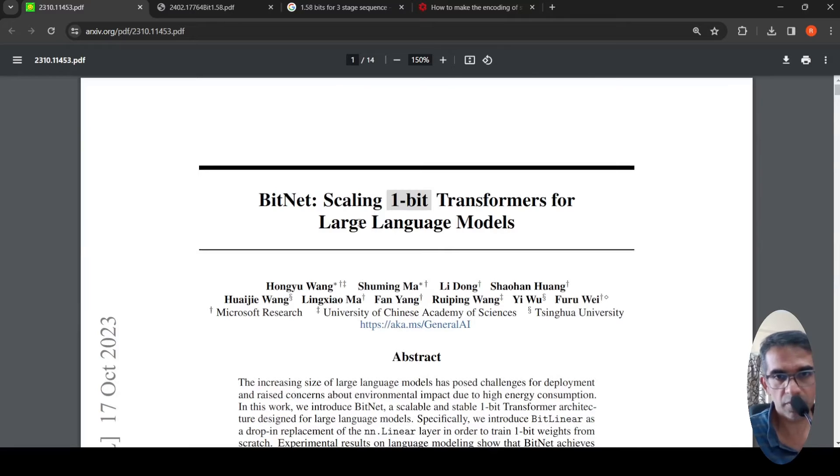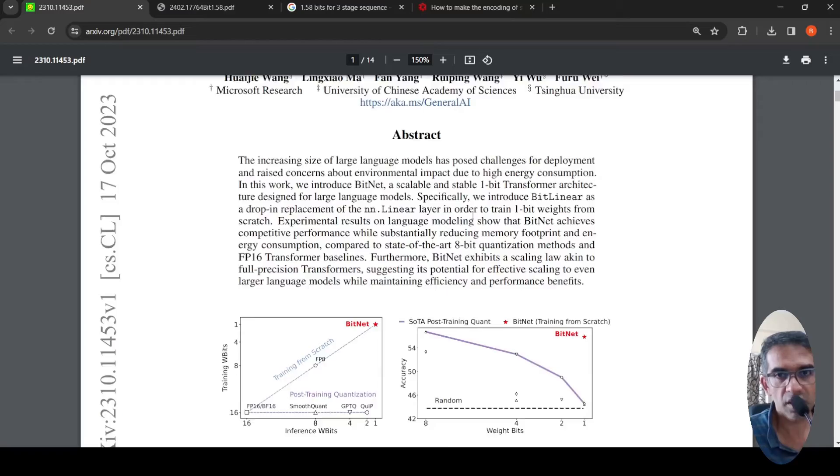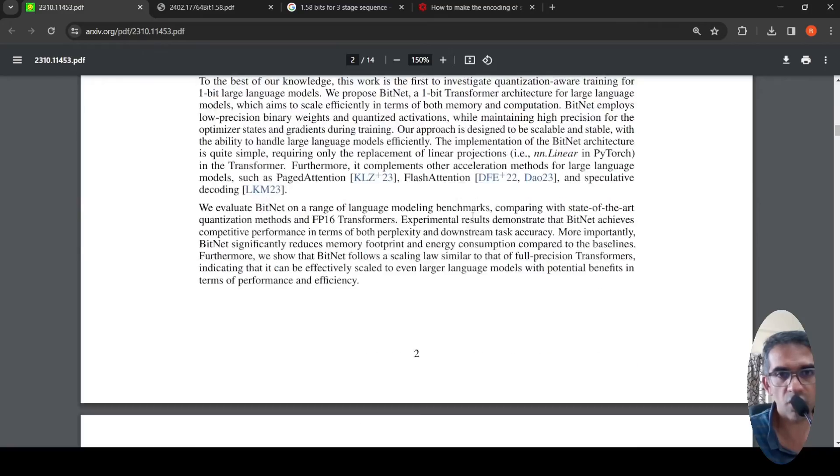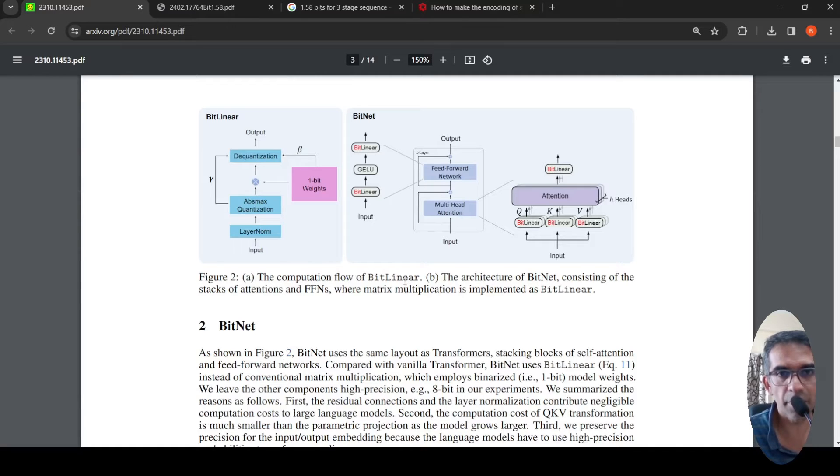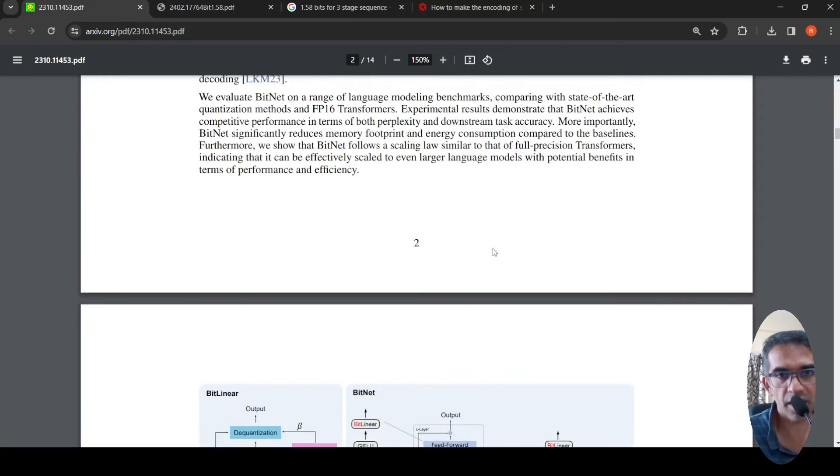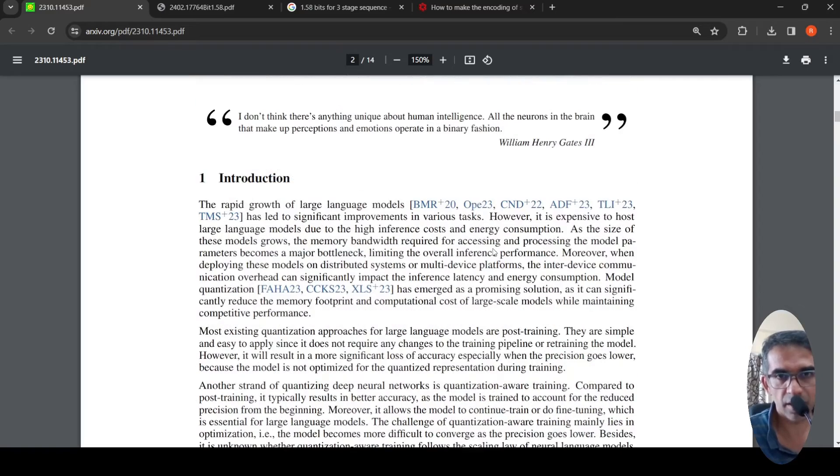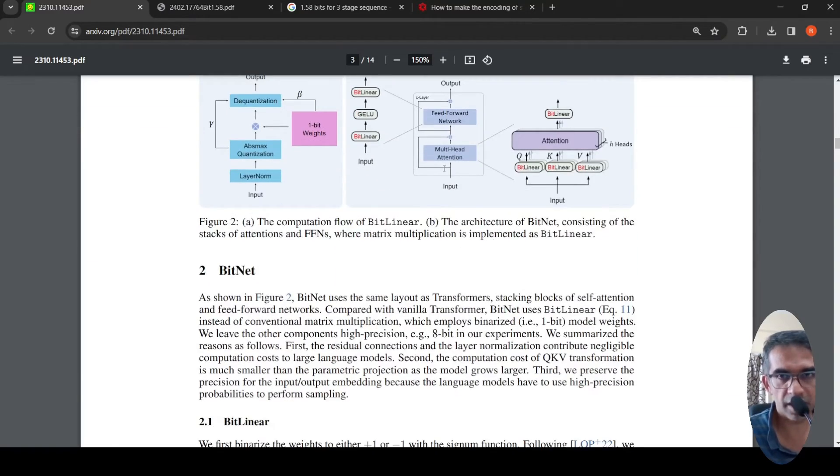Which is another research paper from Microsoft research, which talks about scaling one bit transformers for large language models. So here, again, the idea is that they are making use of something called as a bit linear, a bit linear architecture, or a bit linear neural network layer.